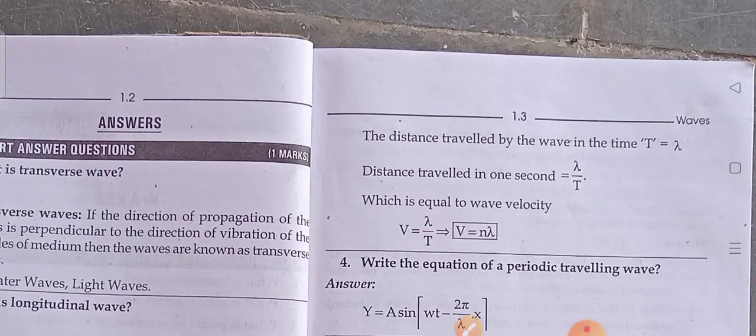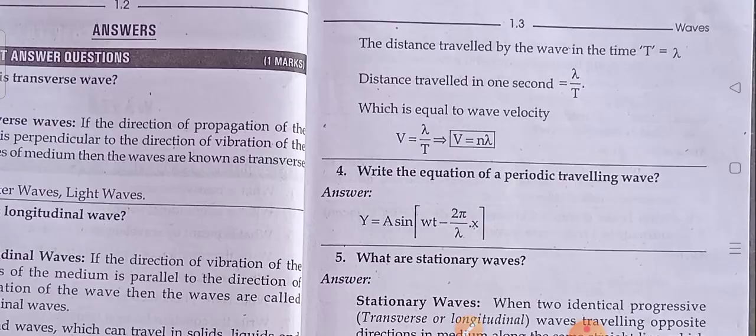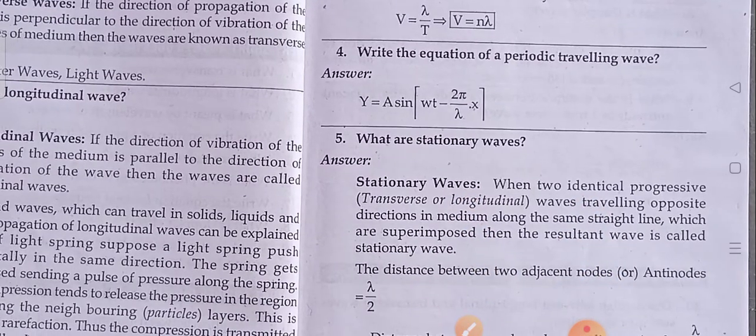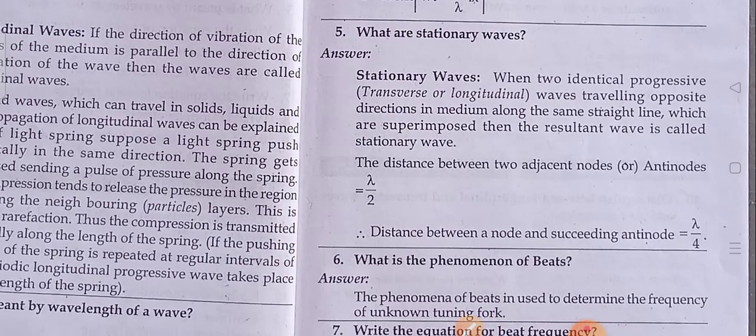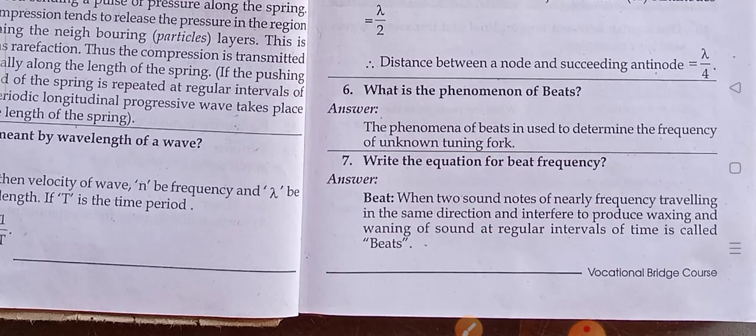Continuation of third answer. Next, write the equations of a periodic traveling wave. Fifth question and answer: stationary waves. Sixth and seventh.